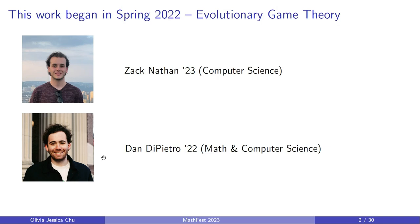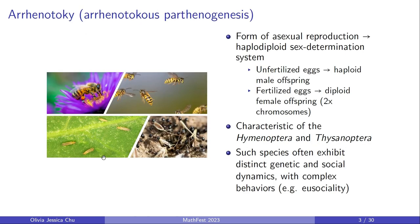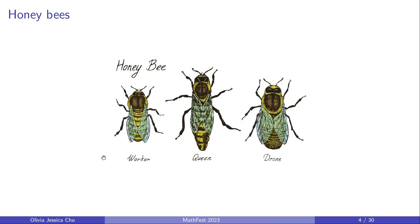Thank you Dan and Zach for working on this project in class and extending it through an independent study. Today I'll talk about arenotokous parthenogenesis — a kind of asexual reproduction that follows a haplodiploid sex determination system. Unfertilized eggs become haploid male offspring, whereas fertilized eggs become diploid female offspring — it's about chromosome count; females have twice the chromosomes of males. This is characteristic of the Hymenoptera, including bees, and also thrips. Such species often exhibit distinct genetic and social dynamics characterized by complex behaviors.